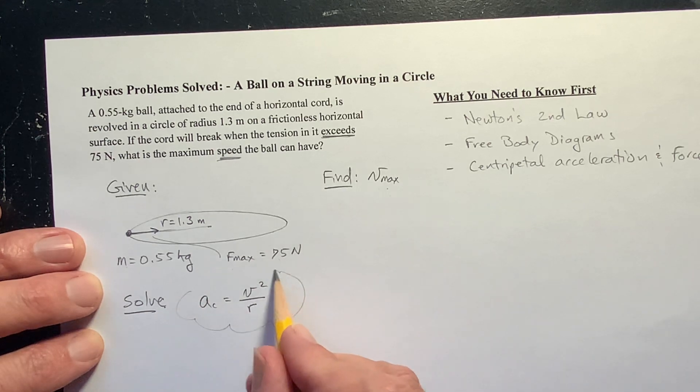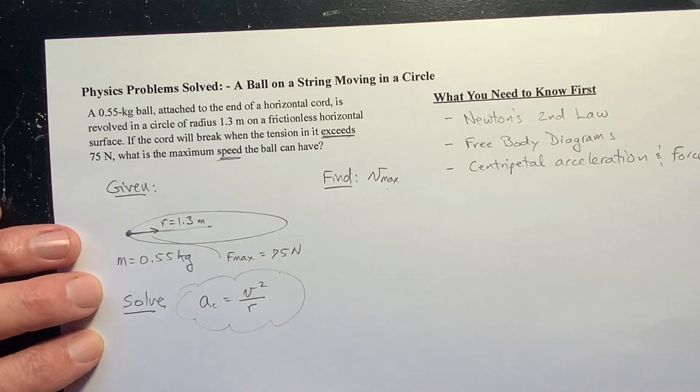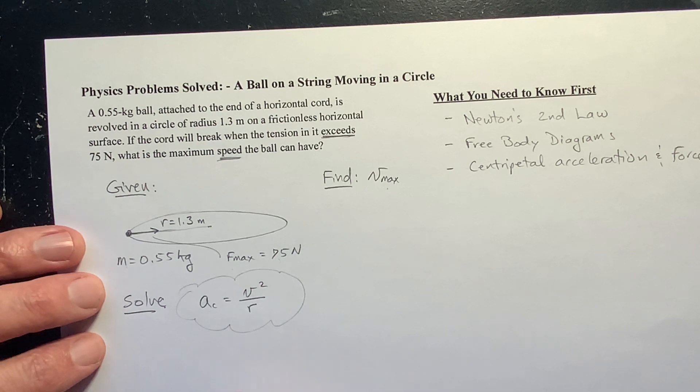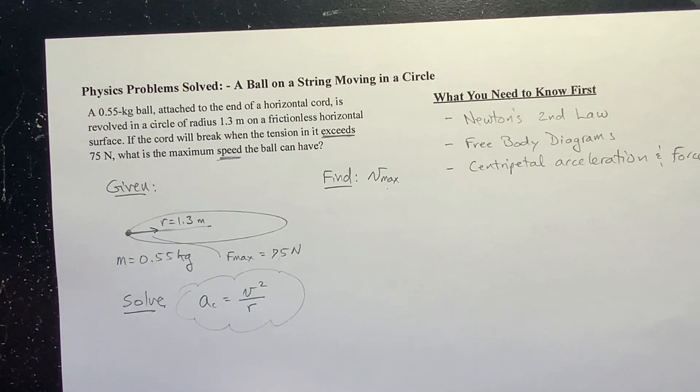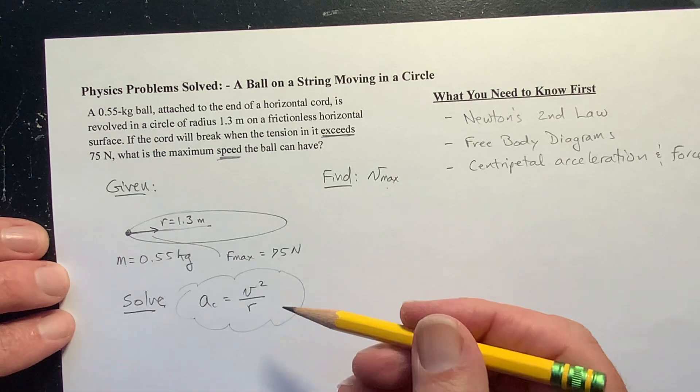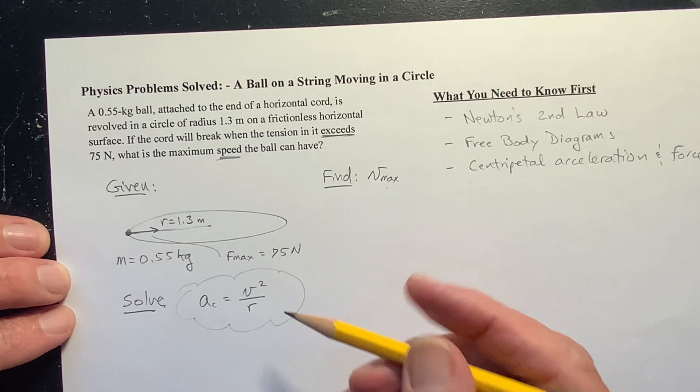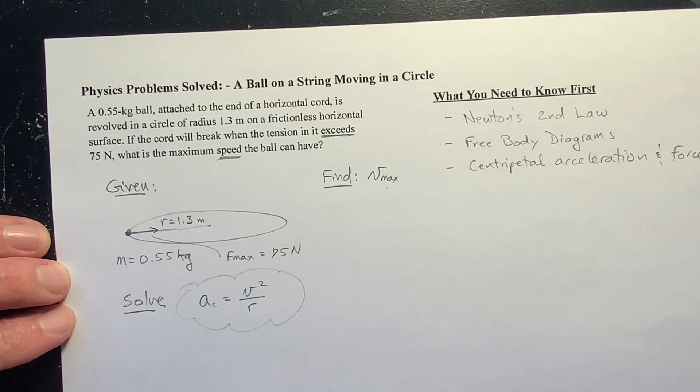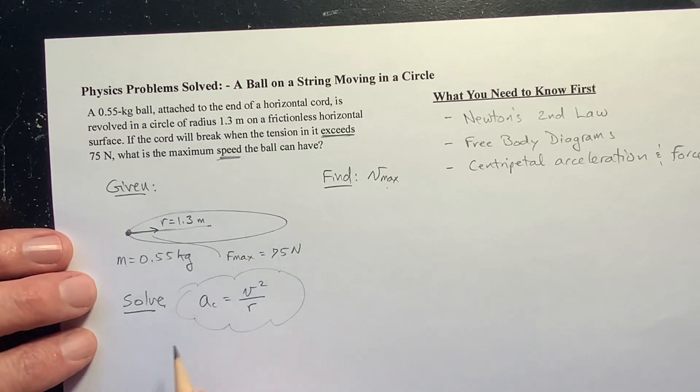Centripetal acceleration is equal to the velocity squared divided by the radius. So this is our basic equation that we're going to use to solve this. And check in the description of this video. I'll put a link to a video, a lecture I've done where I derive where this comes from. But there's a million videos of that on YouTube.